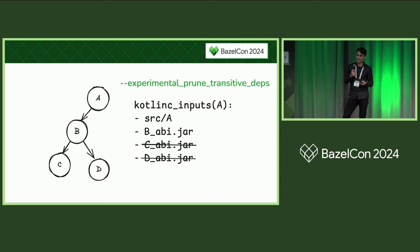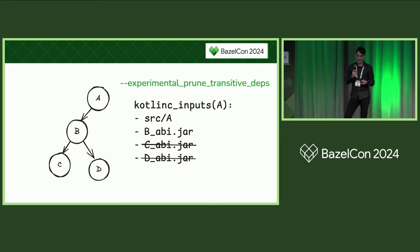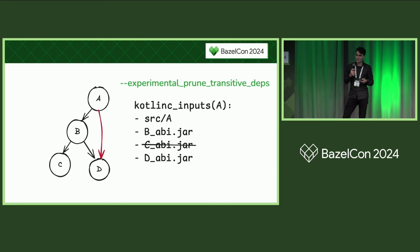The second improvement was using the experimental_prune_transitive_deps flag. When enabled, jars from transitively depended-on targets are no longer included as inputs. The flip side is your target won't compile if it uses code from those transitive dependencies, so you must add strict direct dependencies. In this case, if target A uses something from target D, you need to add that direct dependency explicitly. This seems complicated for a small thing, but in a large build graph it matters because some of our targets could have thousands of reverse dependencies.